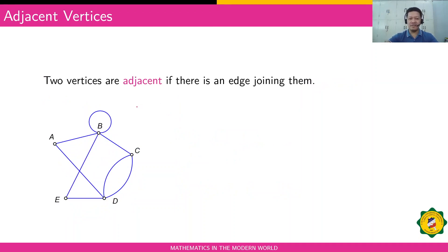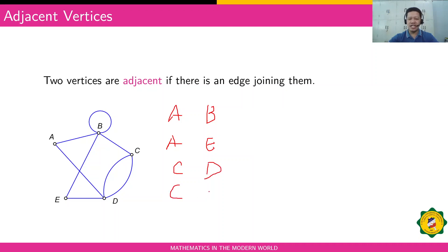The next term is adjacent vertices. When do we say that two vertices are adjacent? In this given graph, are vertex A and B adjacent? Are vertex A and E adjacent? Are vertex C and D adjacent? How about C and A? If they are connected to each other, they are adjacent.